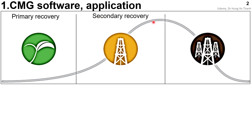Secondary recovery comes after several years, when your oil field begins to decline in production performance. You need to improve the oil recovery by applying water injection or gas injection to produce more oil from the reservoir.